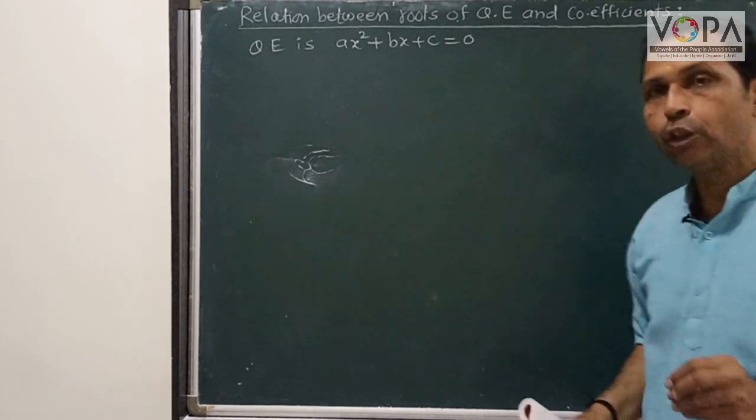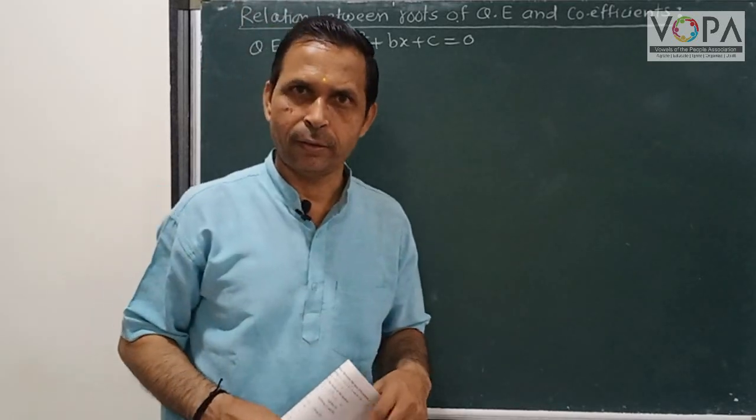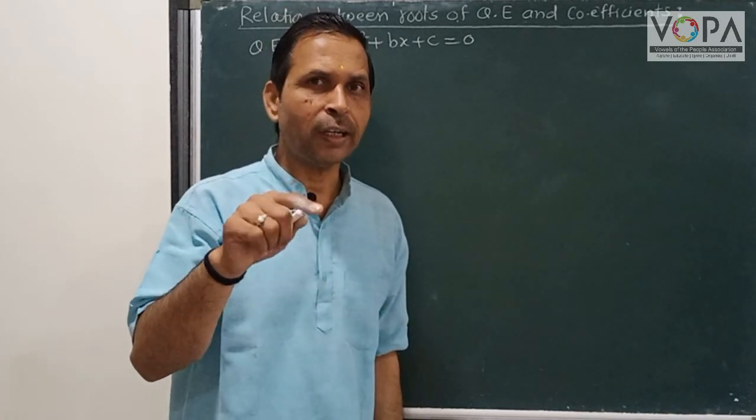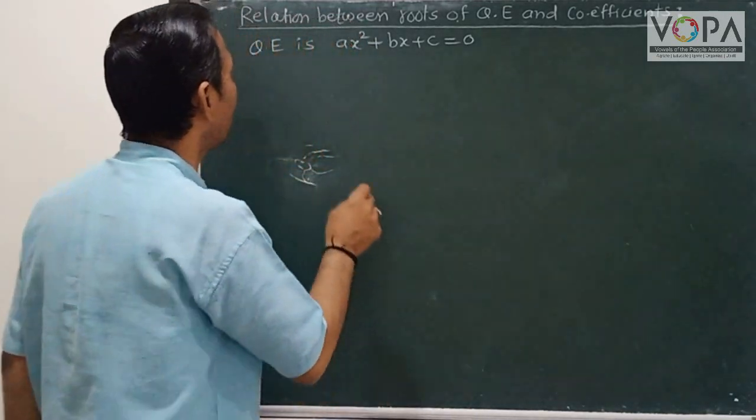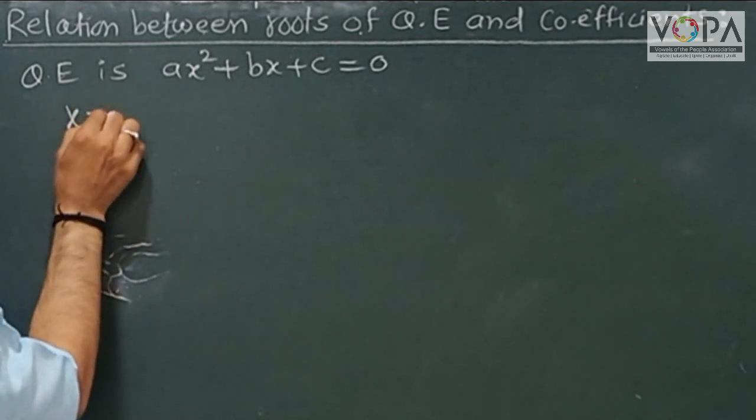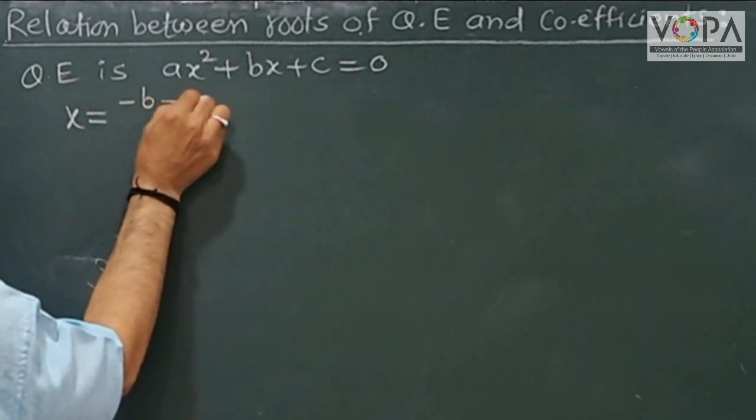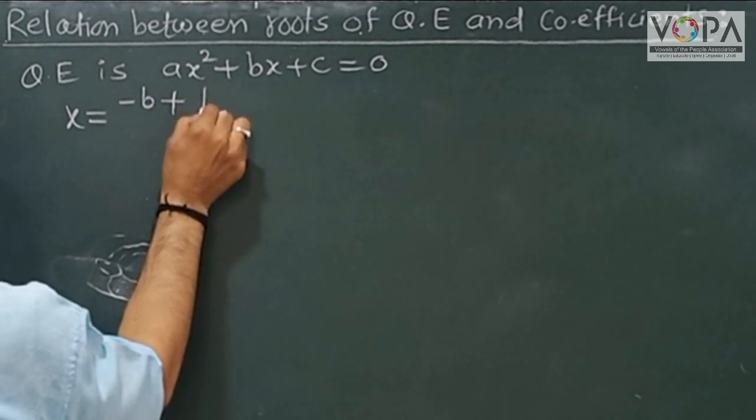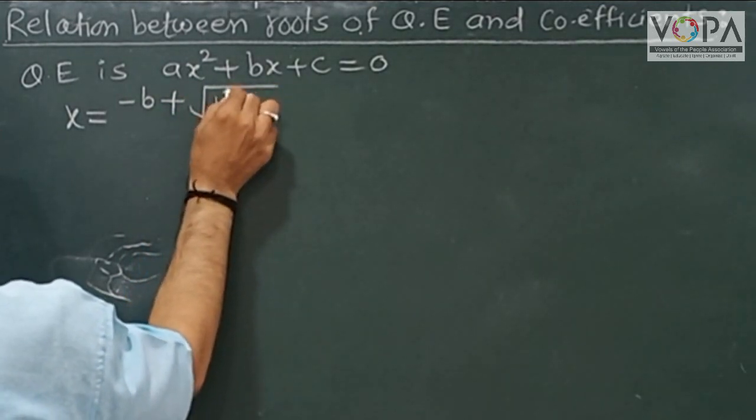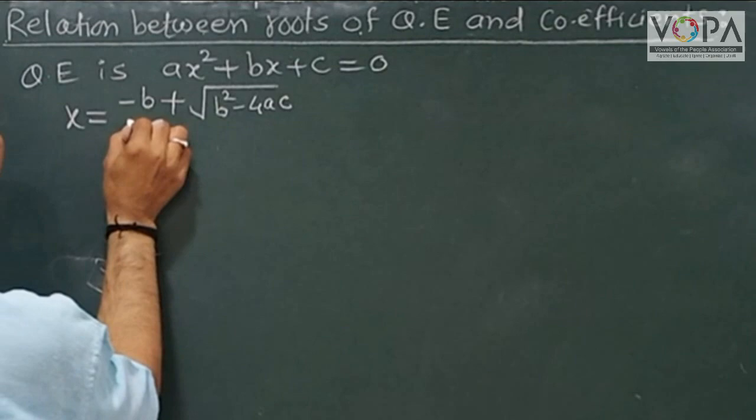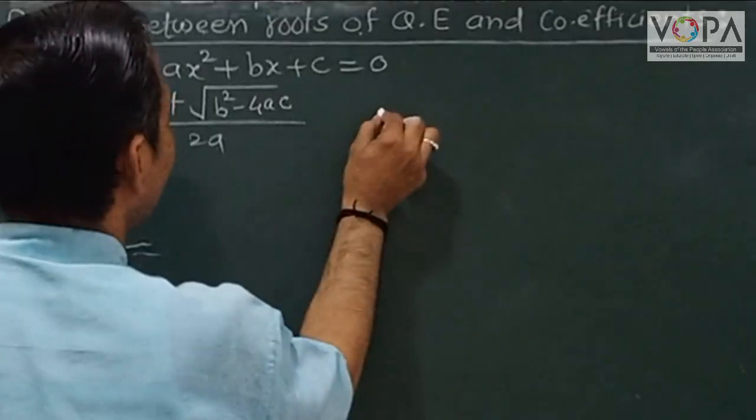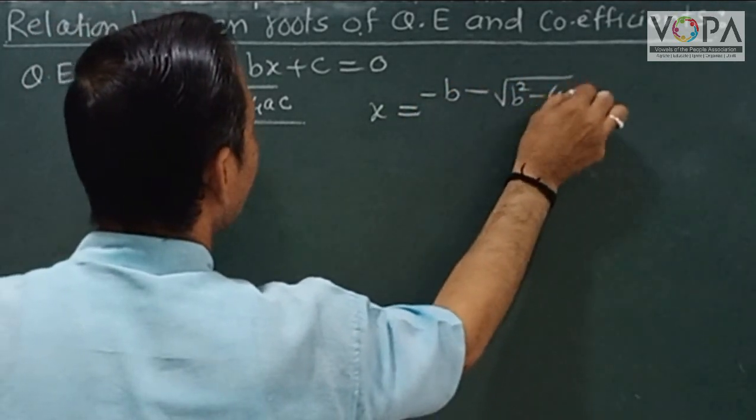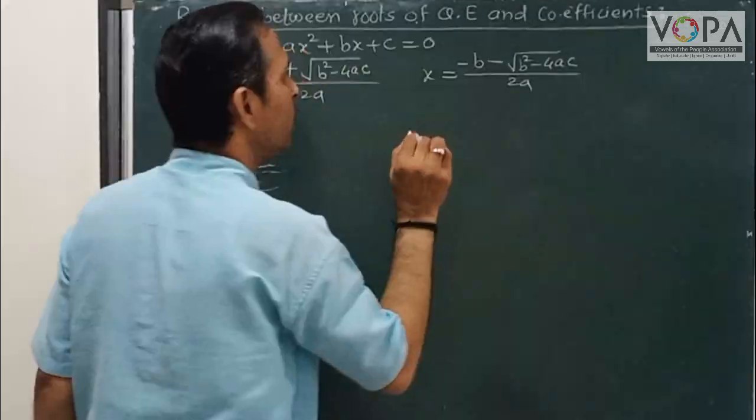Now, we know that the roots of the quadratic equation are given by the formula method. The first value is x = (-b + √(b²-4ac))/2a and the second value is x = (-b - √(b²-4ac))/2a.